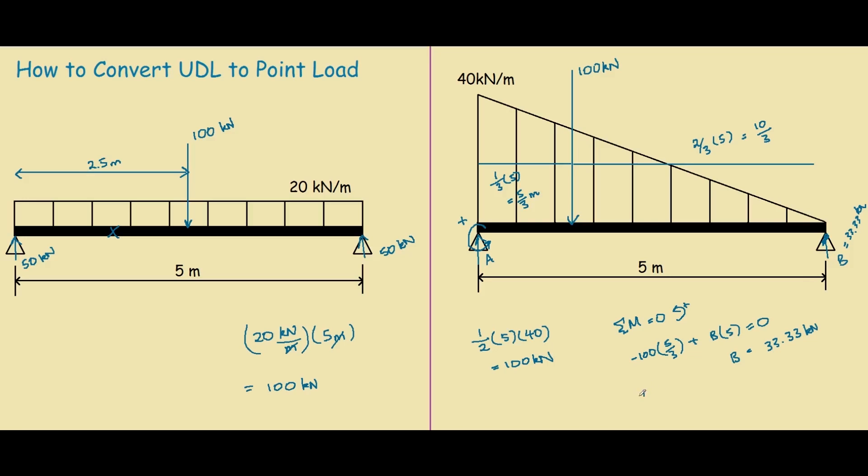And now we can just use the sum of forces in the y direction equals to zero, where positive is up. So we have 33.33 plus the reaction at A minus 100 equals to zero. So if you work out the reaction for A, it would be 66.67 kN.